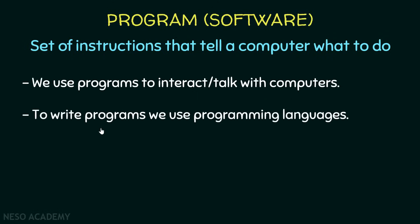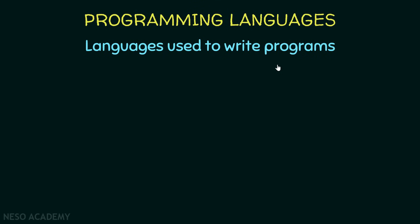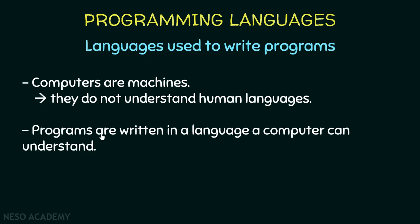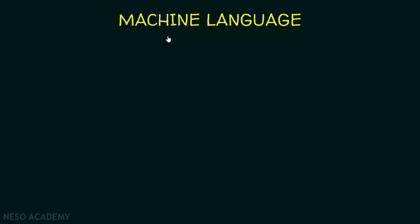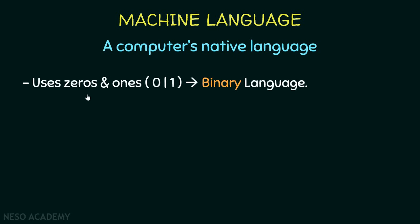In order to tell a computer to do something we should use a program, and to write programs we use programming languages. Programming languages are languages used to write programs. Computers are machines and they do not understand the human language, so programs are written in a language that a computer can understand. Now let's see what we mean by machine language — this is the computer's native language, the main language of the computer. This language uses zeros and ones.